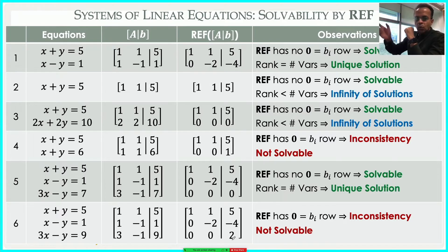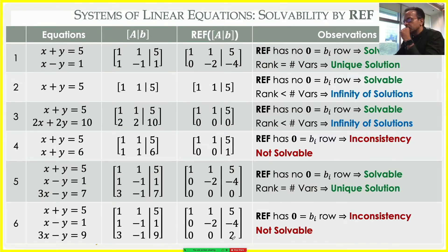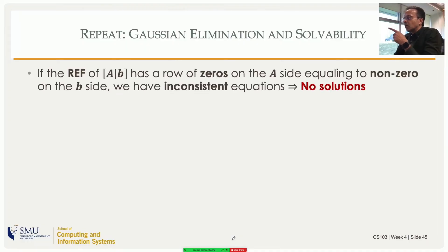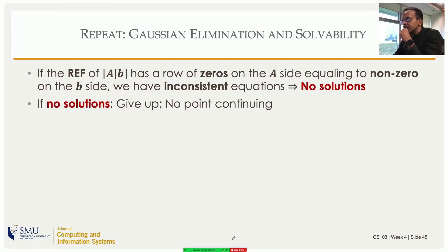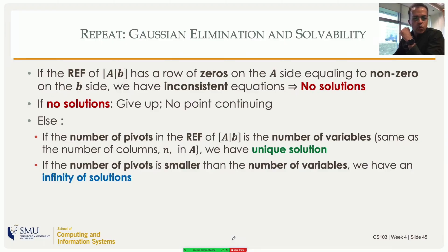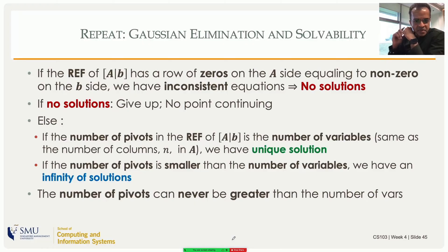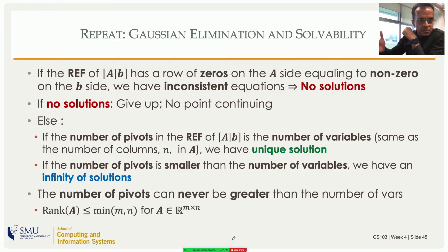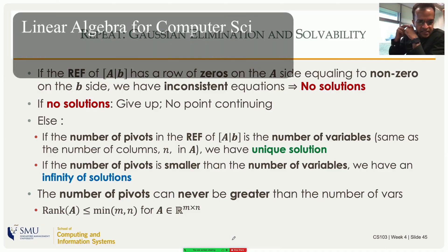To summarize: once you obtain the REF via Gaussian elimination, check the augmented matrix for zero rows on the A side equaling non-zero on the b side — that means inconsistency, no solutions. Otherwise, count the pivots (rank): if rank equals the number of variables you have a unique solution; if rank is less than the number of variables you have infinitely many solutions. The number of pivots can never exceed the number of variables since it equals the number of columns.